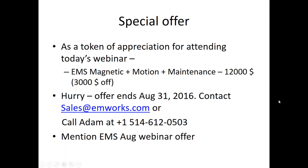Before I begin, there is a special offer from EMworks. As a token of appreciation for registering and attending today's webinar, we are going to offer you our solenoid package — EMS Magnetic Motion along with the first year maintenance — for a price of $12,000, which is about $3,000 off the list price of $15,000. You need to act by August 31st, 2016. Contact sales at emworks.com or speak with my colleague Adam for further information.